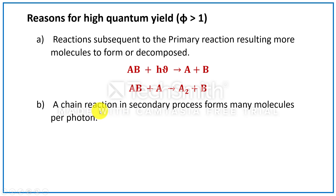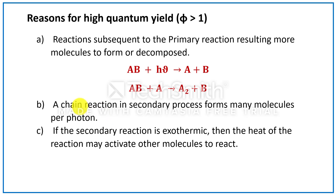The second reason is that a chain reaction in the secondary process forms many molecules per photon. In the secondary process, a chain reaction may be set up so that more product molecules will be formed. The third reason is that if the secondary reaction is exothermic, then the heat of the reaction may activate other molecules to react. One reaction may be exothermic and the heat liberated will be absorbed by another reactant molecule, which gets activated and forms product.